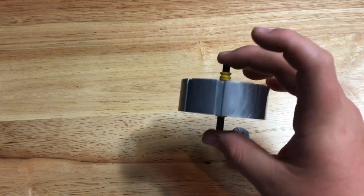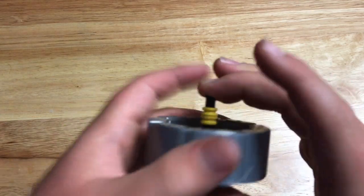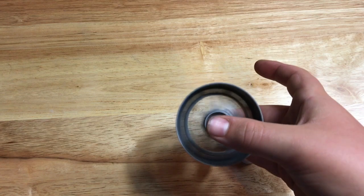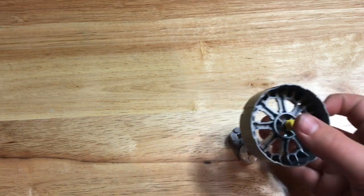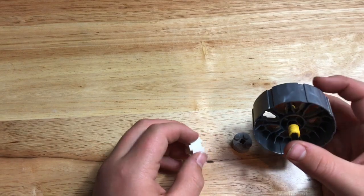After you have both of the yellow things on each side, it should spin pretty good right then. But if you want caps, this is what you use these for.